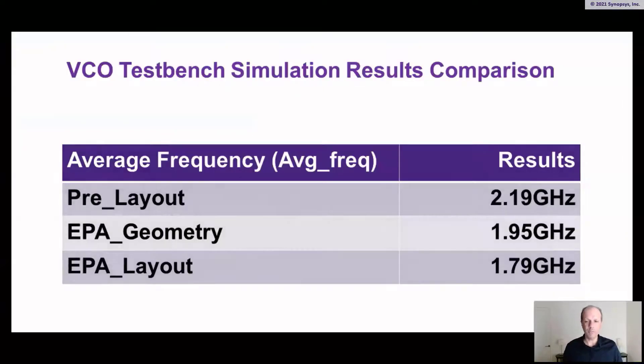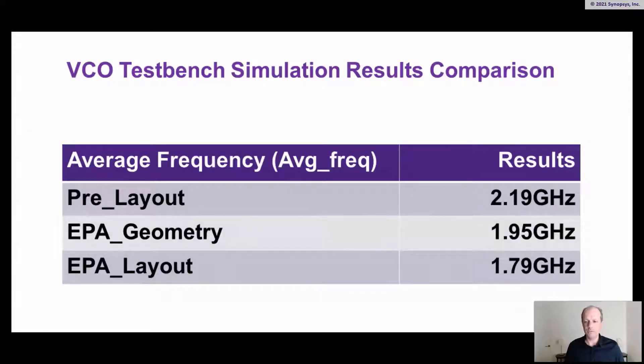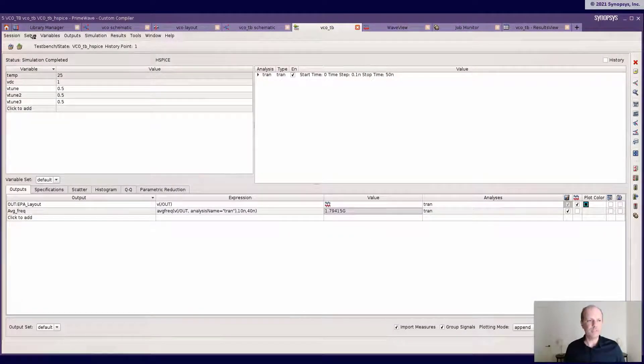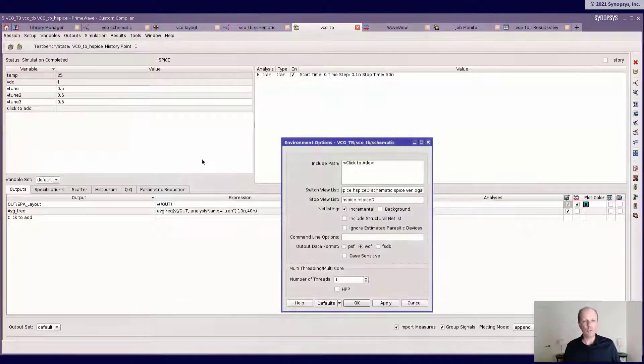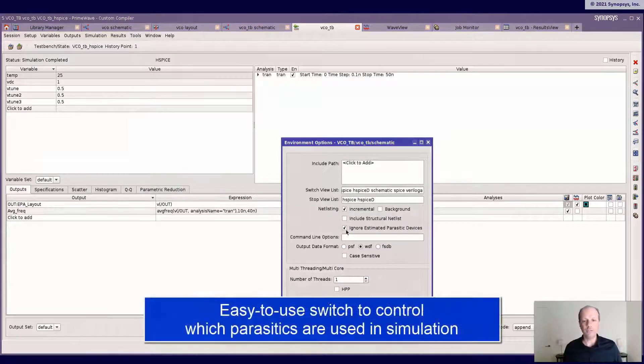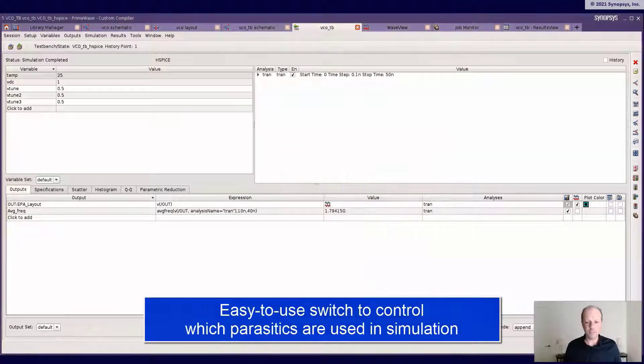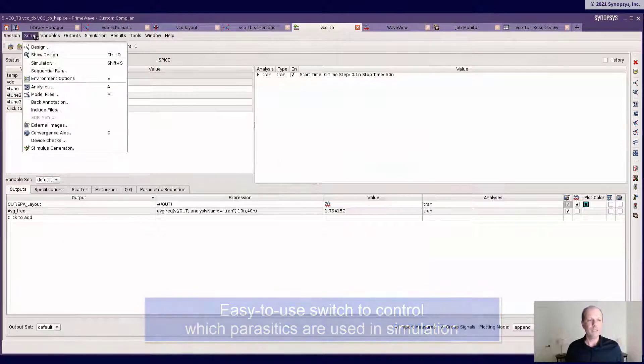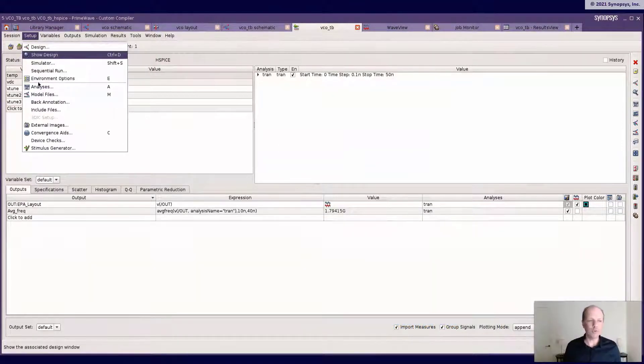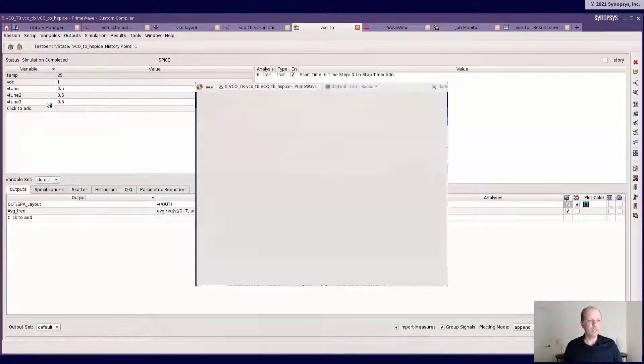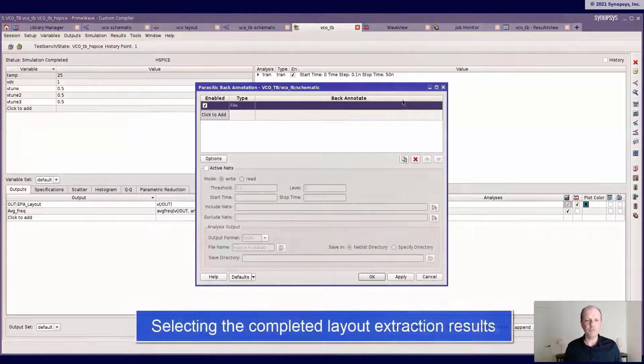And again, as you can see, the impact on the frequency is seen right away, and it's at 1.79 GHz now. And the final run I'm going to show you here is ignoring the parasitic devices and running a partial layout simulation flow with an SPF that we have created from the sign-off ICV plus StarRC flow.